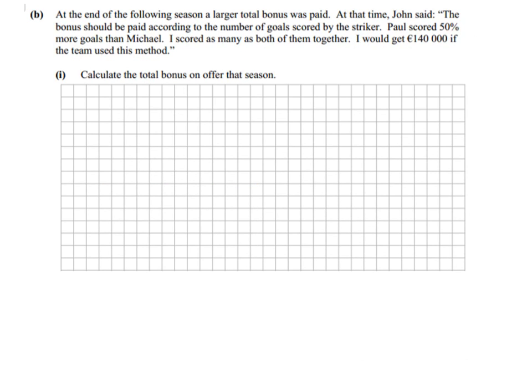Part B asks us: at the end of the following season, a larger total bonus was paid. At that time, John said the bonus should be paid according to the number of goals scored by the striker. Paul scored 50% more than Michael. I scored as many as both of them together. I would get £140,000 if the team used this method. So the question is, calculate the total bonus on offer this season. We don't actually know how much money has been shared out. All we know is that John got £140,000 for his share if we use this method that he suggested.